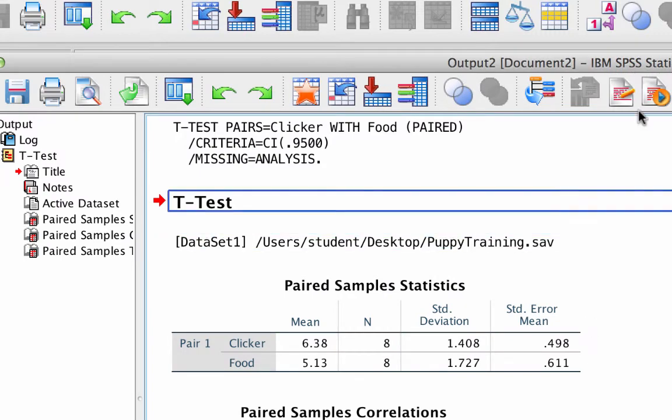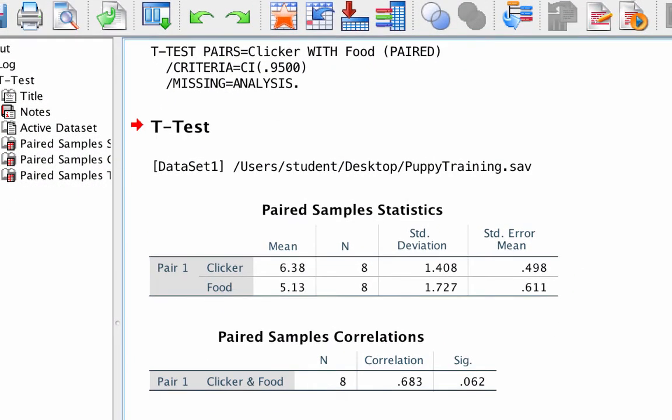In the output window, we see the paired sample statistics. We can see the means and standard deviations for each group, along with sample sizes and the standard error of the mean. We will use these for the APA write-up.